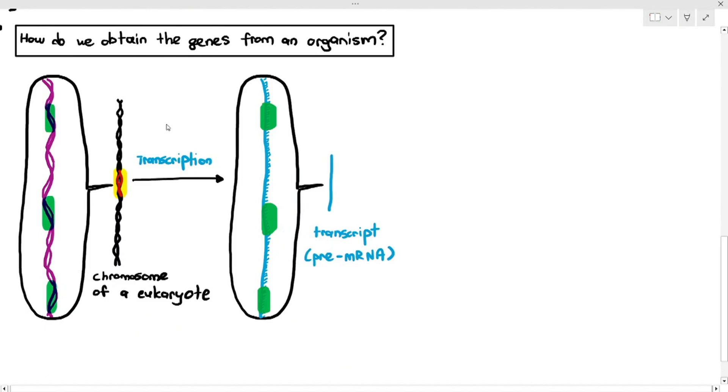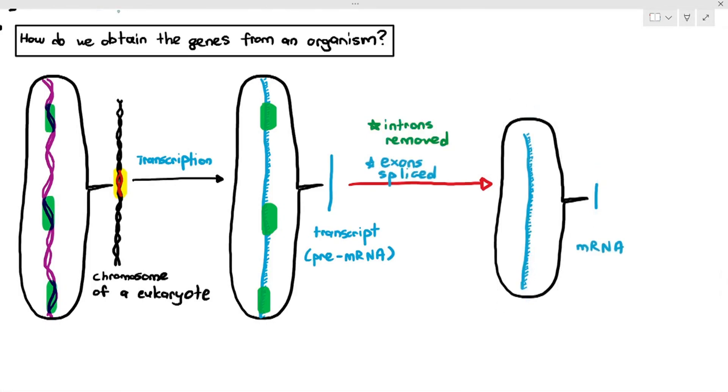Now, in chapter 6, you studied that the introns will be removed, and the exons, which are just the blue colour parts, will be spliced together to get the mRNA with no exons. Now, you have an mRNA with no exons, but mRNA is RNA. I want a gene with no exons. How do we solve this problem then?